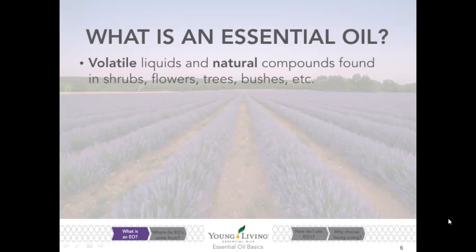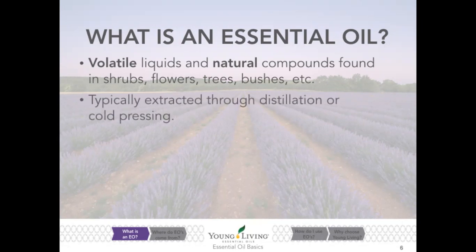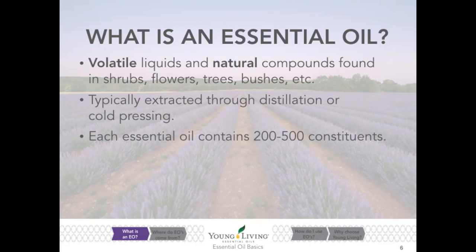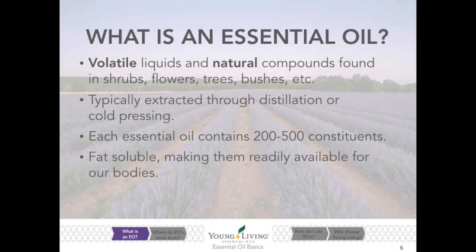Essential oils are volatile liquids and natural compounds found in shrubs, flowers, trees, bushes, and more. They're volatile, which means they evaporate quickly into the air. They're typically extracted through distillation or cold pressing. Each essential oil contains 200 to 500 constituents, which makes them very diverse in their effects — no two oils are alike. They're fat soluble, which allows them to penetrate into blood and tissues, and they're highly concentrated — in fact 100 to 10,000 times more concentrated than the dried herb.